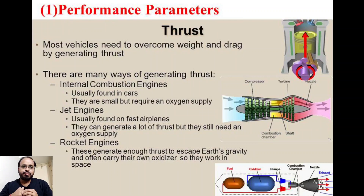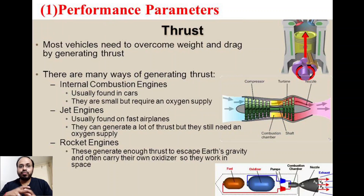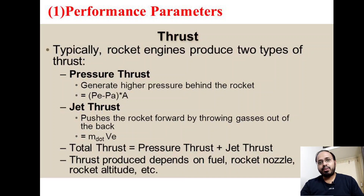In the case of jet engines, used in aircraft and airplanes, they can generate a lot of thrust but still need oxygen or air supply from the atmosphere. In the case of rocket engines, they generate enough thrust to escape Earth's gravity and carry their own oxidizer, so they can work in space. All three machines produce thrust but in different ways — IC engines and jet engines use oxygen directly from the atmosphere, while rocket engines carry their own oxidizer.